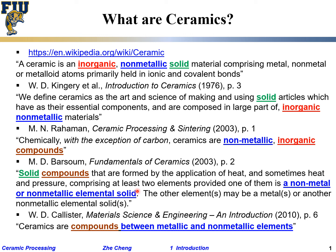The last definition is from Callister, who wrote the engineering materials textbook. He says ceramics are compounds between metallic and non-metallic materials. In summary, ceramics are mostly compounds — though they can include pure elements like carbon or silicon, which is completely brittle like a silicon wafer. They are non-metallic, inorganic materials. That's what we'll be dealing with in this class, and the field is very broad.